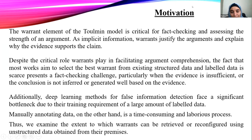I want to discuss the motivation to generate warrant elements. The warrant in the Toulmin model is critical for fact-checking and assessing the strength of an argument. The implicit information in the evidence is called the warrant, which justifies the argument and explains why the evidence supports the claim.